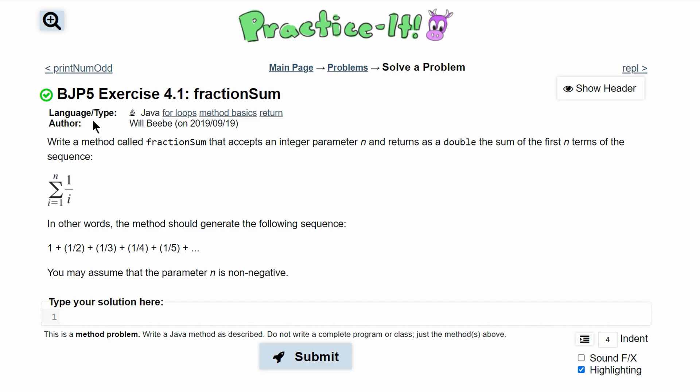For practice exercise 4.1 fraction sum, we need to write a method called fractionSum that accepts an integer parameter n and returns as a double the sum of the first n terms of the sequence. Basically, this would be the summation from i equals 1 to n of 1 over i.